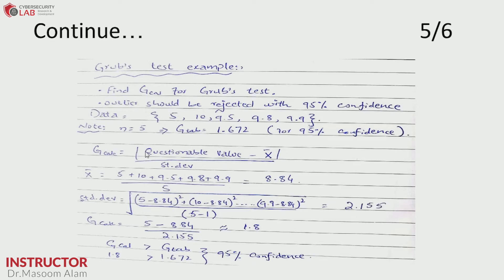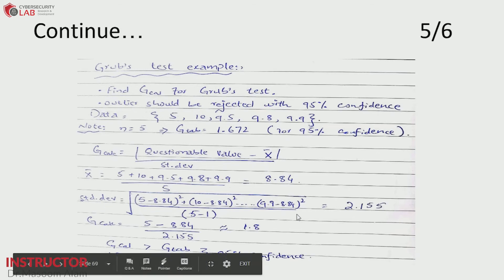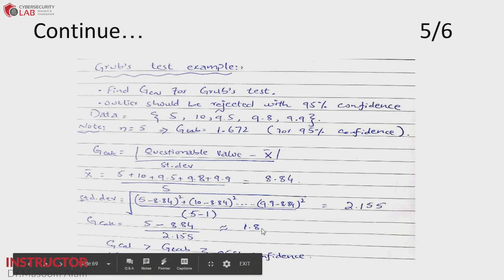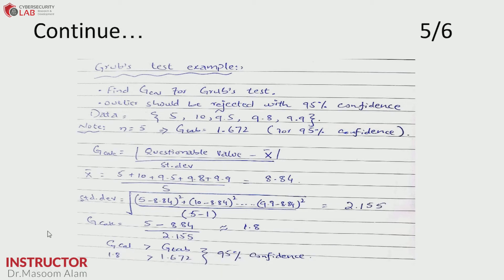This is the formula for calculating the Grubbs value. We have the questionable value, which is 5, and then we calculate the average of all the series. This is divided by the standard deviation, which is calculated by subtracting the average from each respective element of the list and dividing by n minus 1. We get a result of 1.8, and when we make a comparison, 1.8 is greater than 1.672, so this confirms that 5 is the outlier.